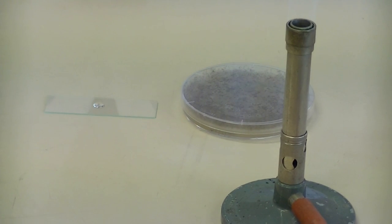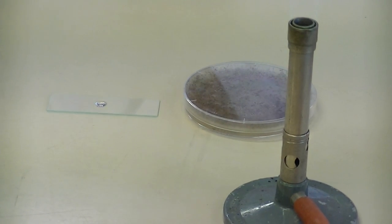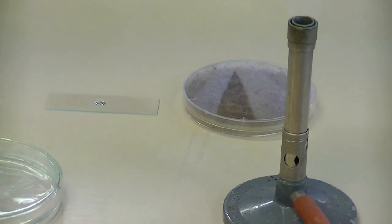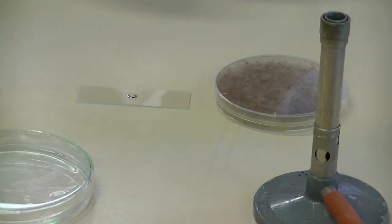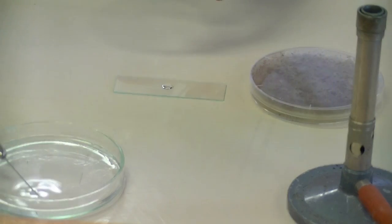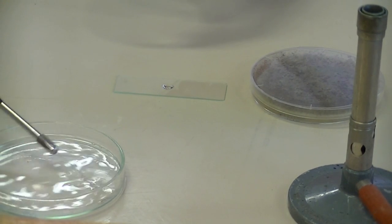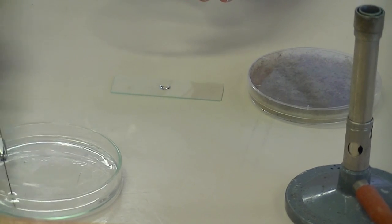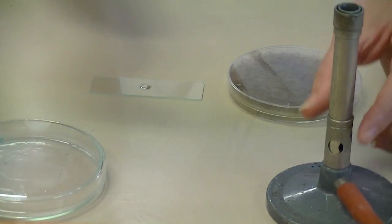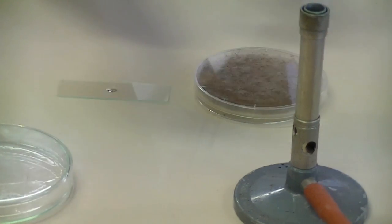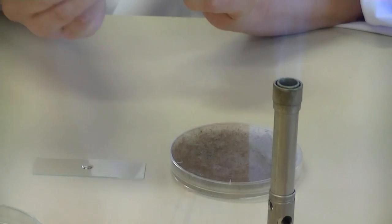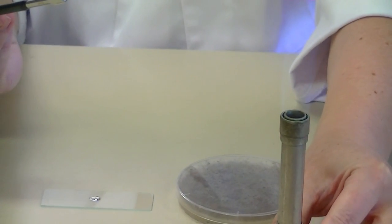We then need to sterilize the needle. So you should have your alcohol bath. So grab a needle, dip it into the alcohol and then quickly flame it in the blue flame to burn off the alcohol. So that is nice and sterile.